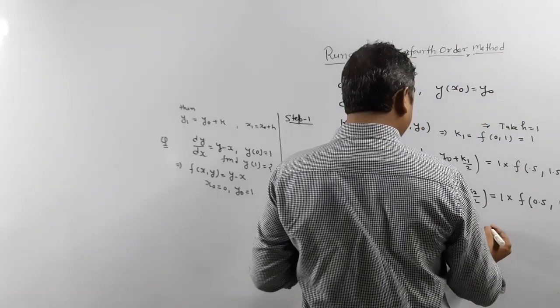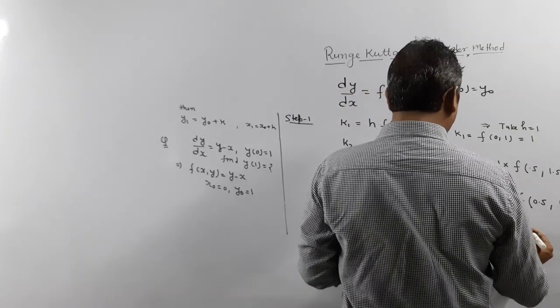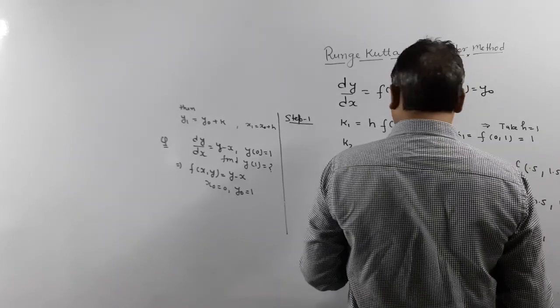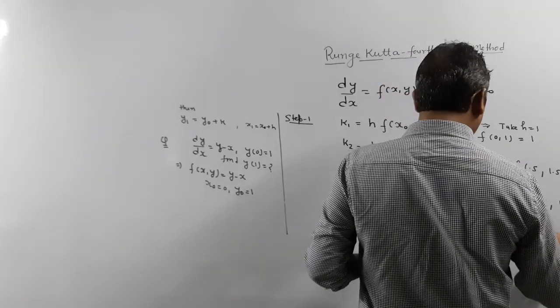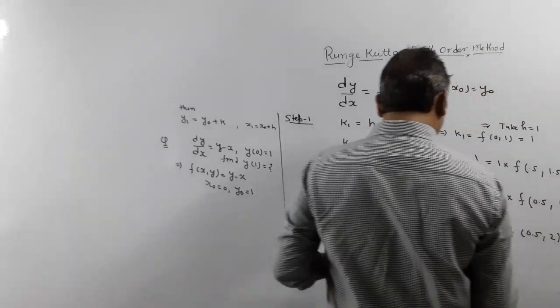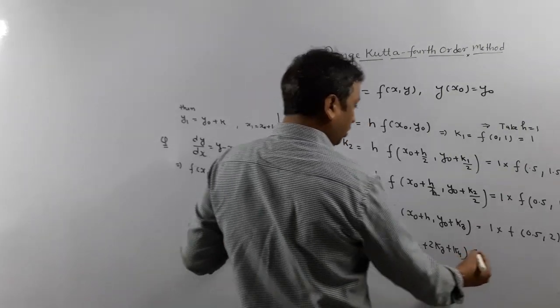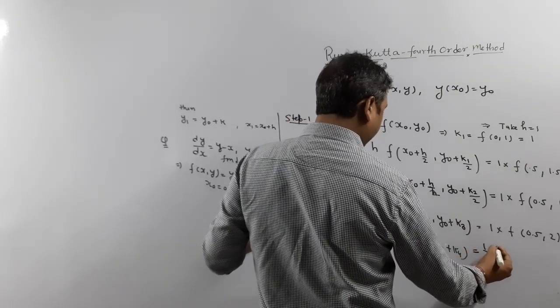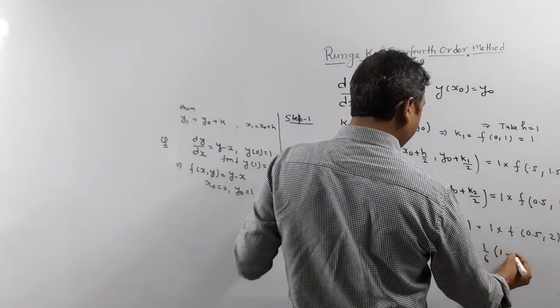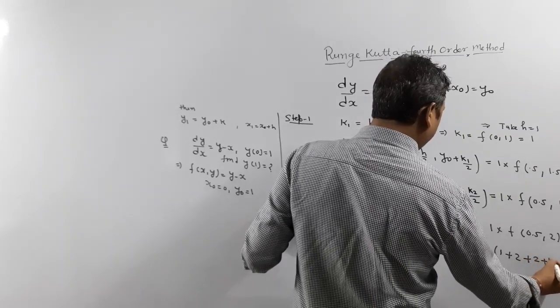What is k4? k4 is h, 1, function at x0 plus h means 1, and y0 plus k3. So 1 plus 1 is 2. So 2 minus 1 means 1.5. Once you have all k1, k2, k3, k4, what is K? K is 1/6(k1 1 plus 2k2 means 2, 2k3 means 2, k4 means 1.5).